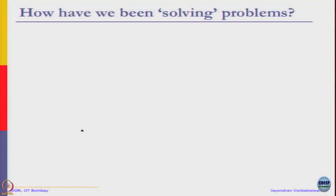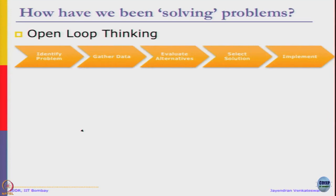Let us see how we have been solving problems. Traditionally, we are very comfortable in what is called open loop thinking, where we first identify some problem, then gather data, evaluate alternatives, select solution, implement. This is true not only in student projects but also in real life. People want to list a set of problems and say, what is the best we can do about it, and then suggest a solution.